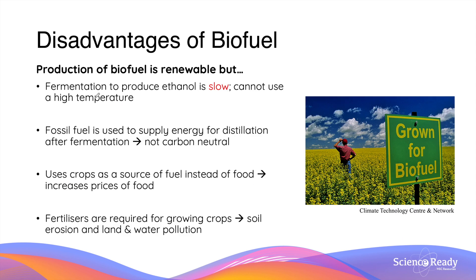Although the production of biofuel is renewable, it has many disadvantages compared to fossil fuels. Fermentation of glucose to produce bioethanol is a very slow process, as a relatively low temperature is required to keep the yeast enzyme alive, meaning this production process cannot use high temperatures to increase the reaction rate. This means producing bioethanol via fermentation takes time and leads to greater cost. After fermentation, ethanol needs to be separated from the mixture using distillation, which requires a significant amount of energy, usually supplied using fossil fuel.